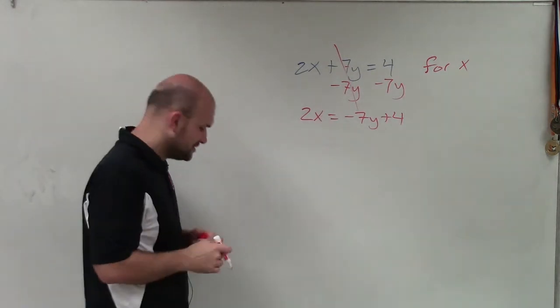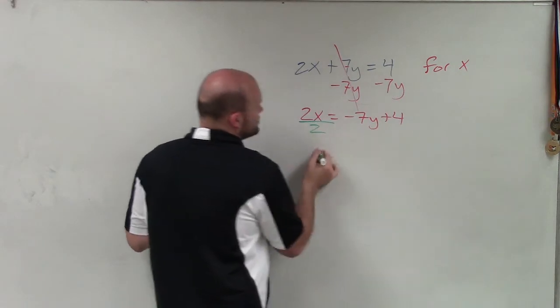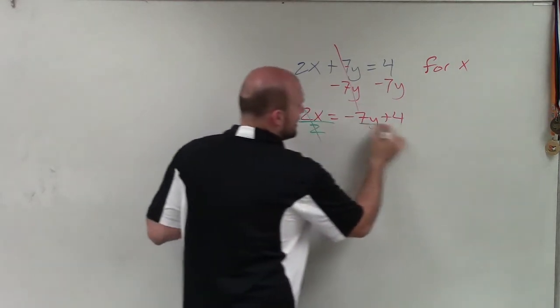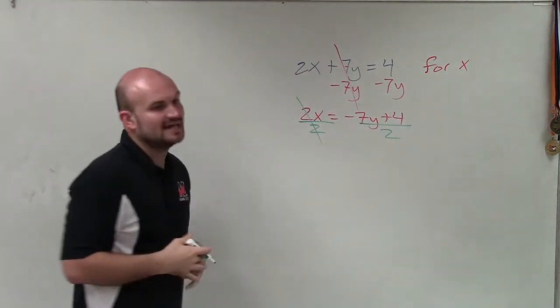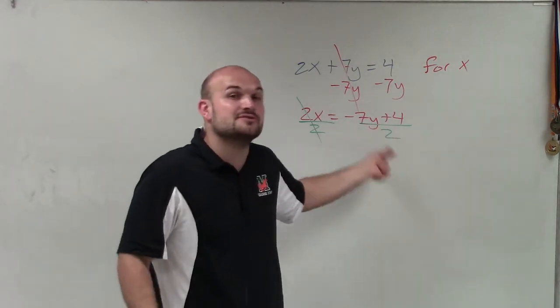Now I need to undo multiplication of 2. So therefore, I need to apply the division property of equality. So therefore, now that's going to divide to 1, and I got to make sure I divide on both sides. Now when we're dividing an expression by one term, we've got to make sure that number divides into both of those.